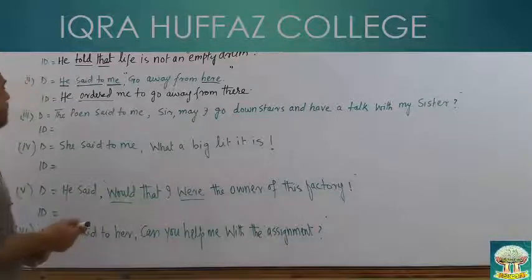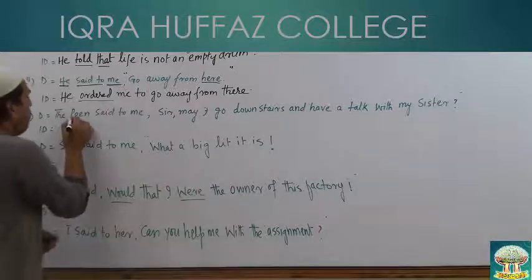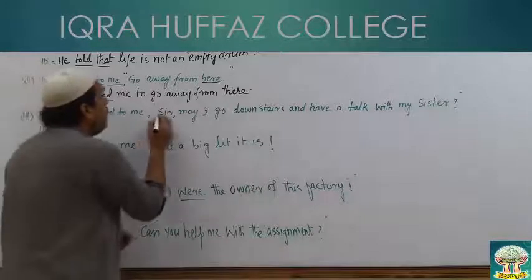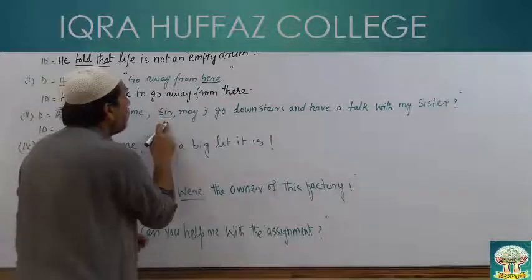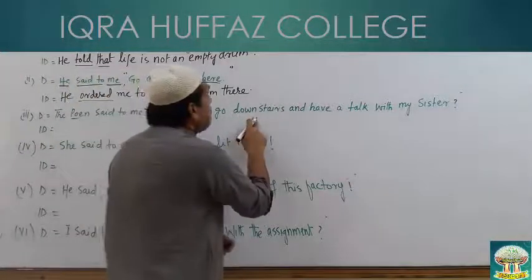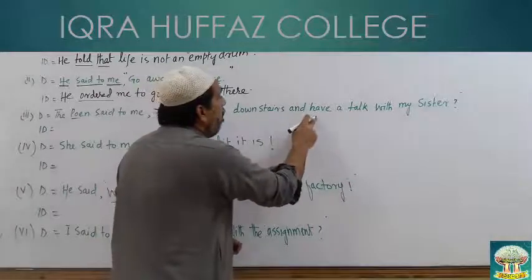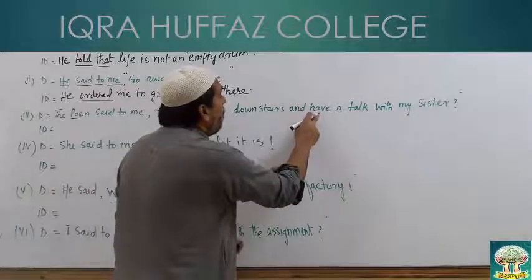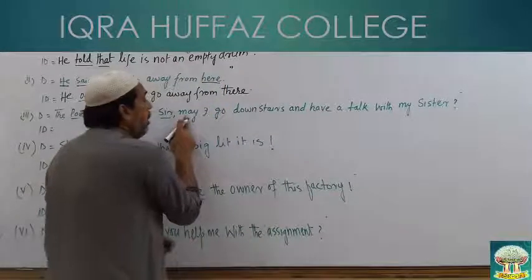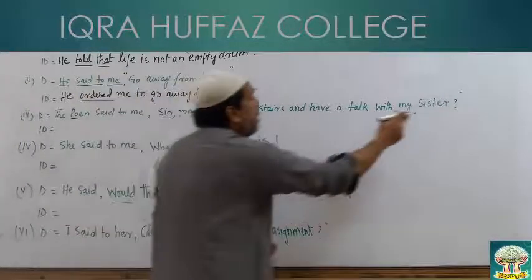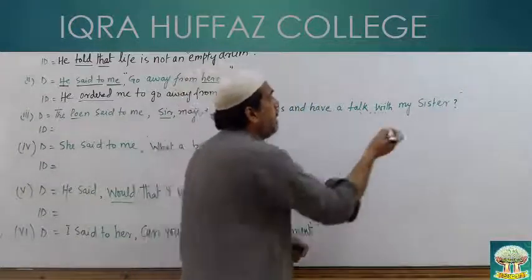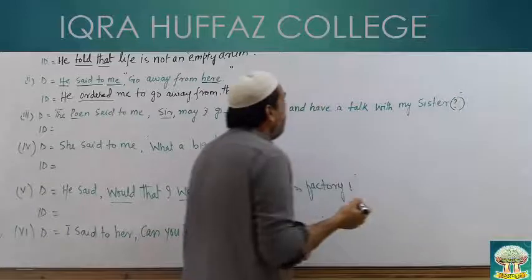तीसरा sentence: 'The PN said to me, sir, may I go downstairs and have a talk with my sister?' PN ने मुझसे कहा। 'Sir' का मतलब है respect show हो रहा है — 'may I go downstairs, क्या मैं सीढ़ियों से नीचे जा सकता हूँ, and have a talk with my sister, और क्या मैं अपने sister से बात कर सकता हूँ।' Sentence 'may' से शुरू हो रहा है, 'sir' भी है, और question mark भी है — तो 'ask respectfully' हो जाएगा।